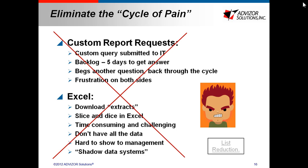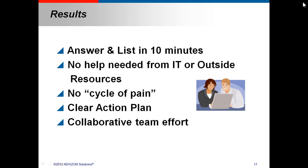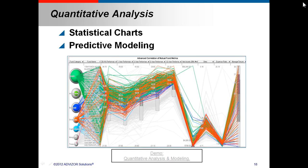That's a good example of this whole concept of eliminating the cycle of pain and getting an answer in ten minutes instead of several weeks. And in that example, the query we started with, the three highest rated categories, wasn't yielding enough. So we had to go back and add a category, and we wanted to see how that category fit against the other categories. And we did this without help from IT or outside resources, no cycle of pain, got a clear action plan with a collaborative team effort. That's another way these visualization tools are used.